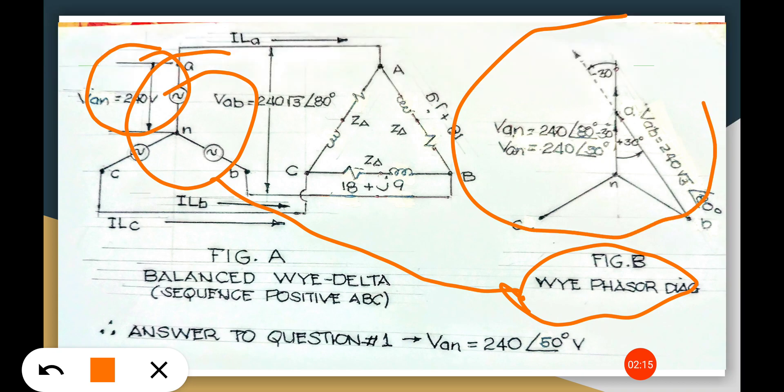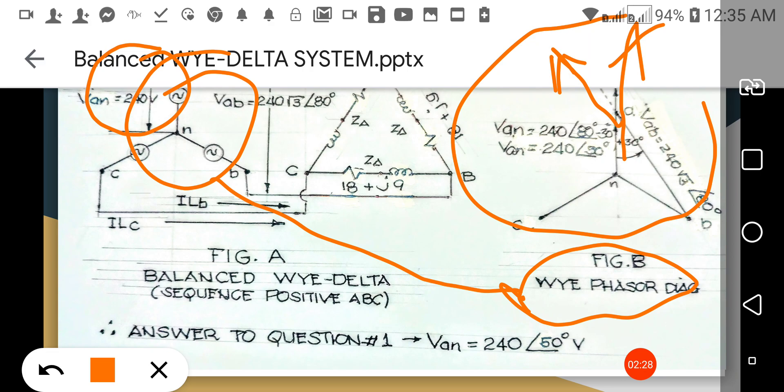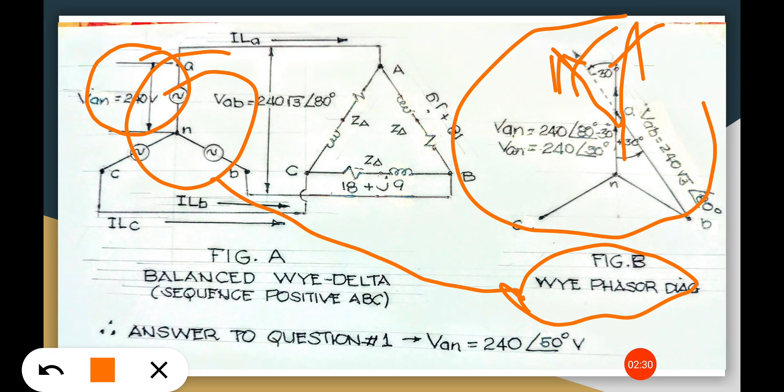And we have the 240V phase Va over there and it has a 30 degrees, negative 30 degrees phase shift angle.